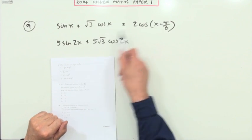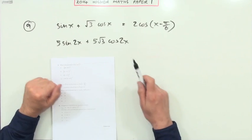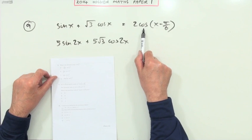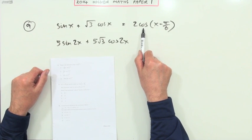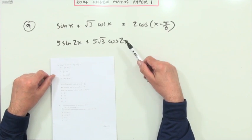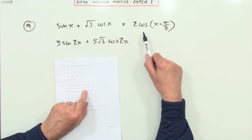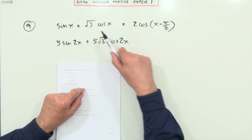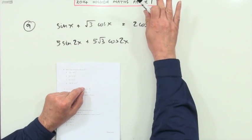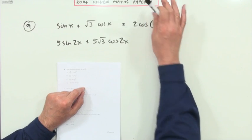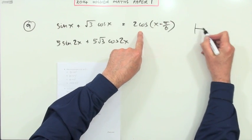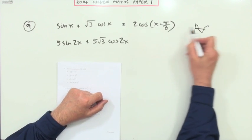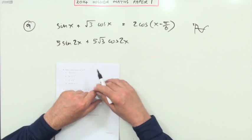Number nine: we function again, but simplifying to a single trig term gives you two cos, and that tells you the maximum value is two. If you reduce it to just a cosine, it doesn't matter what the angle is — a cosine can only go from one to negative one, so two times it will go up to two. So the maximum value is two.